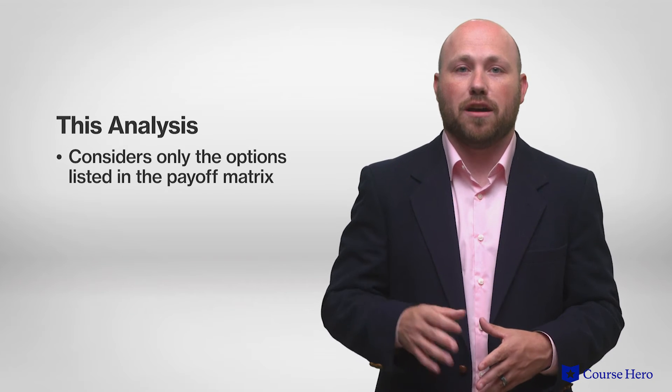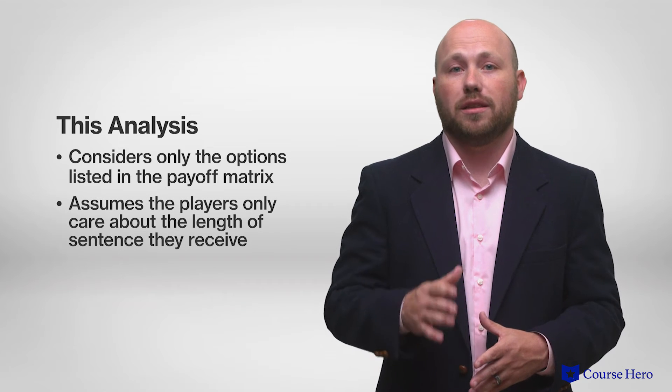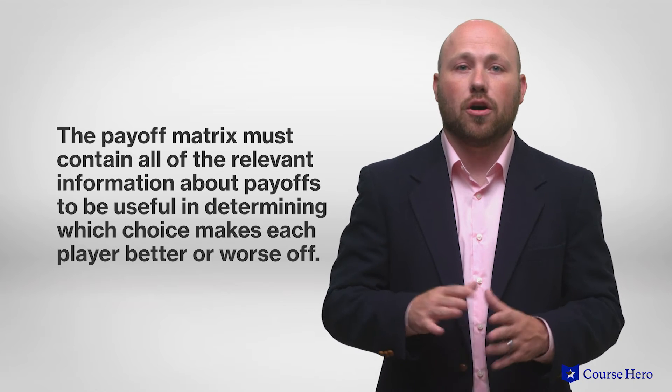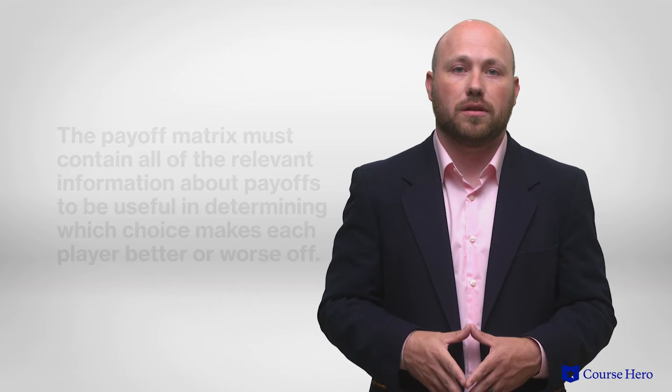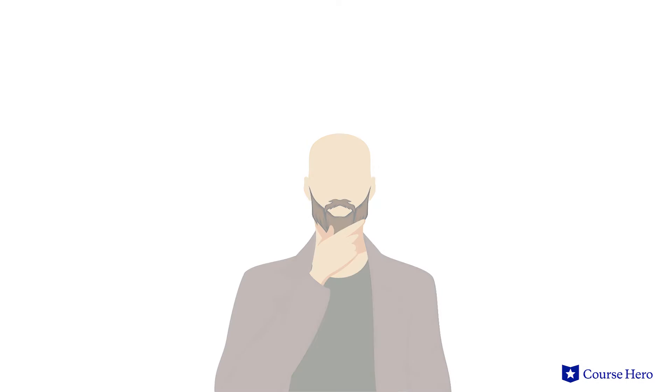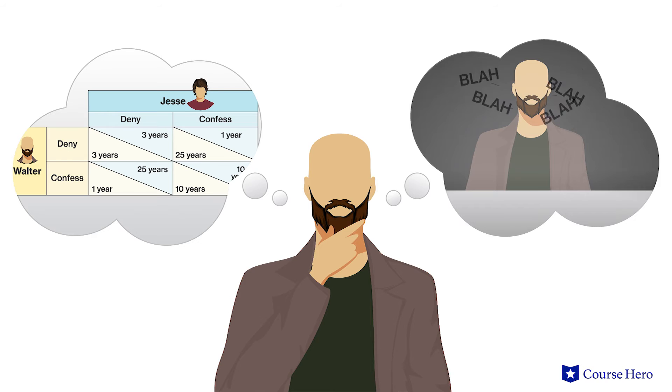There are two important things to note here. First, this analysis considers only the options listed in the payoff matrix and assumes that players only care about the length of sentence they receive. The payoff matrix must contain all relevant information about payoffs to be useful. If each player cared about their reputation, for example, that would have to be added to the game through the payoff matrix. Second, in this particular game the payoffs are symmetric, meaning the payoffs are the same for both players if the choices are reversed. The result is that the payoffs to Jesse when Walter denies or confesses are exactly the same as those to Walter when Jesse denies or confesses. With both of these assumptions, Walter will go through the same calculations as Jesse, and his best response in both cases is to confess.